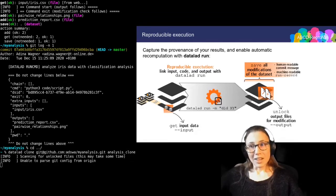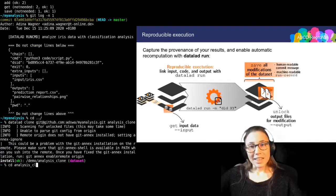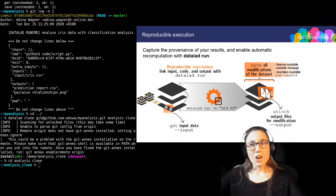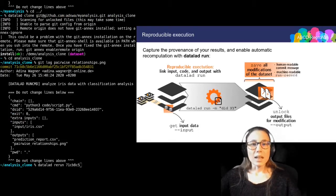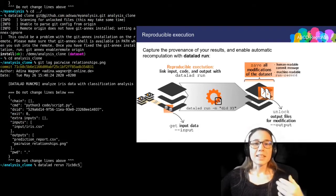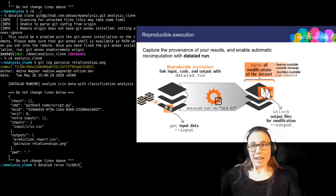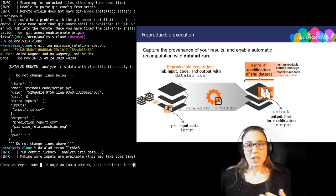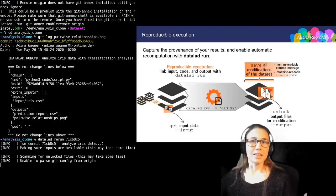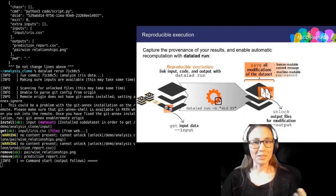Then I can use the commit identifier that you can see here, and I can plug it into a command called datalad rerun. And what DataLad does then is it re-obtains the input data, it unlocks outputs for modification, and it will perform the exact same analysis again, which is absolutely fantastic.